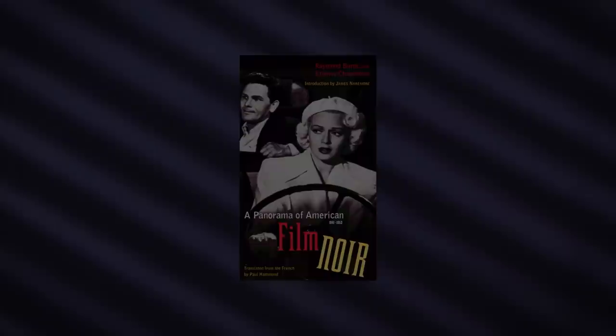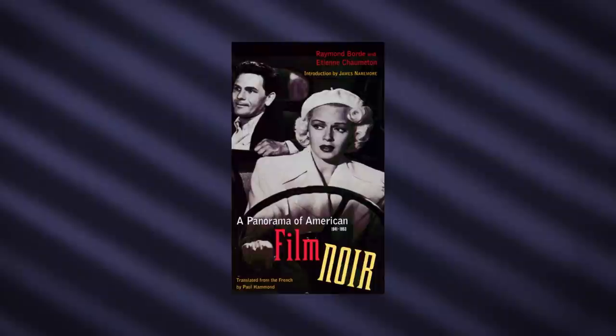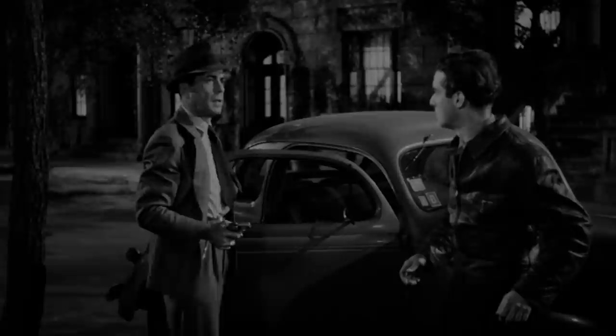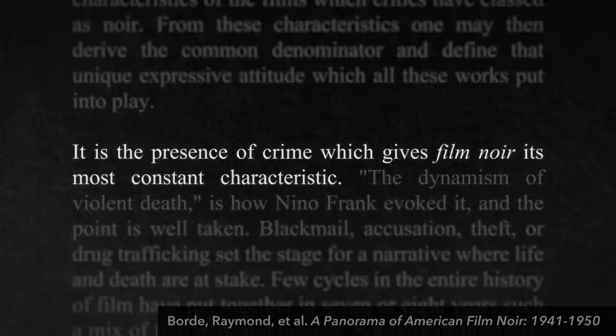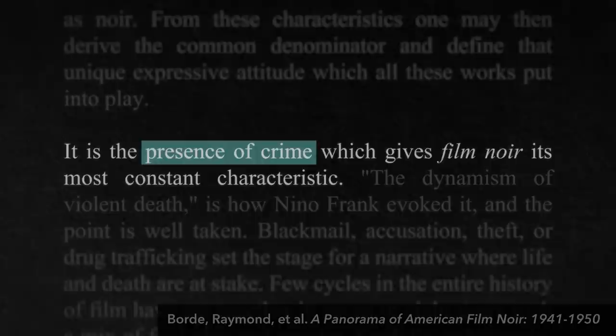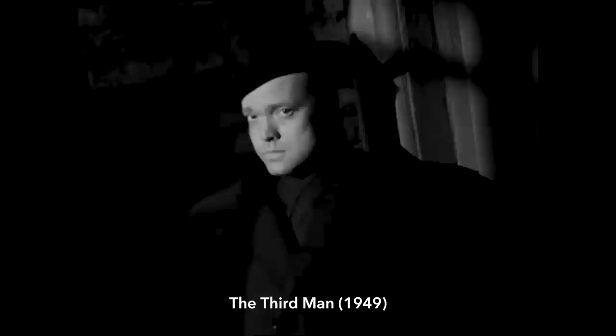The first book ever written about film noir was published in 1955. It describes a few prominent characteristics of film noir that show up again and again. I want to talk about three of them, beginning with the presence of crime. The authors wrote: "It is the presence of crime which gives film noir its most constant characteristic." The inclusion of crime was not in and of itself revolutionary — there has always been crime in Hollywood films. The difference was how these films treated the morality of crime.